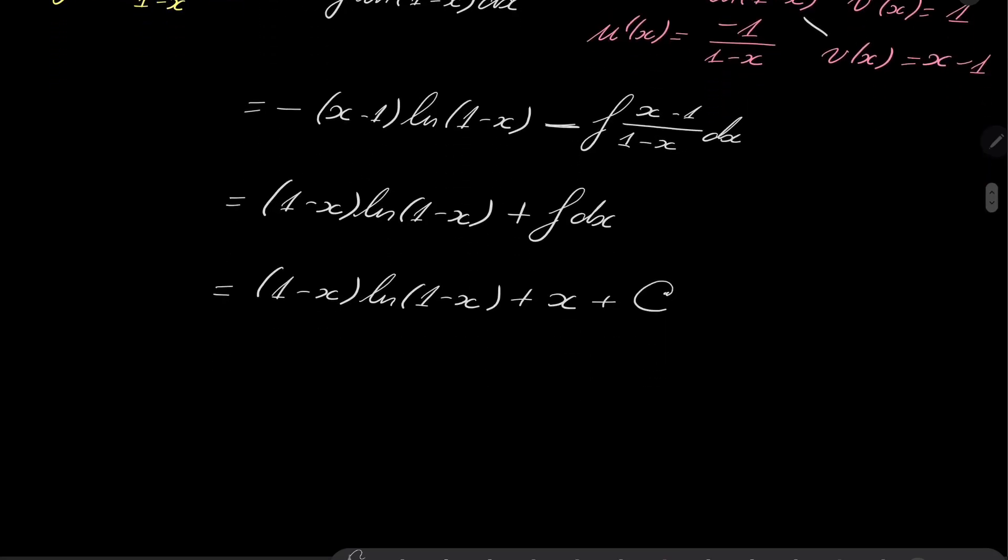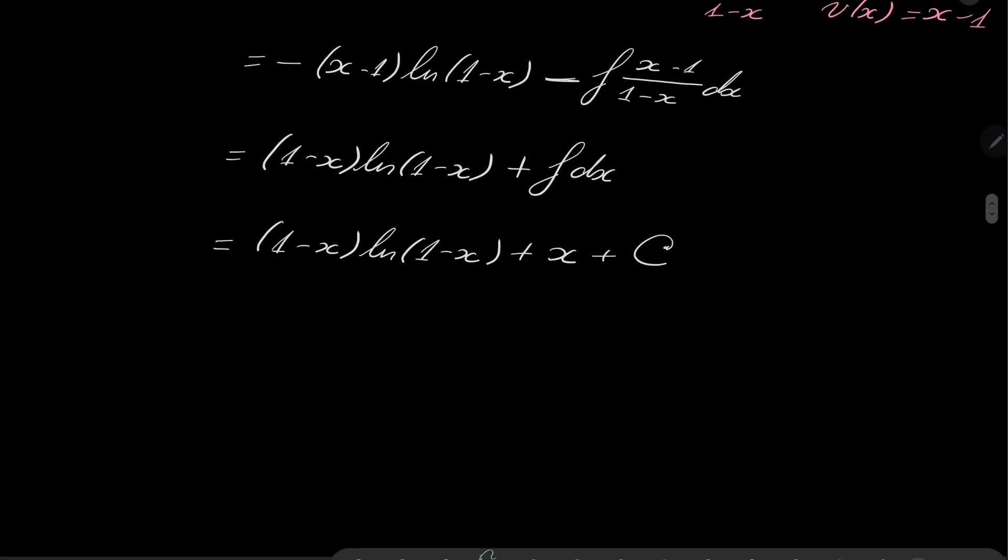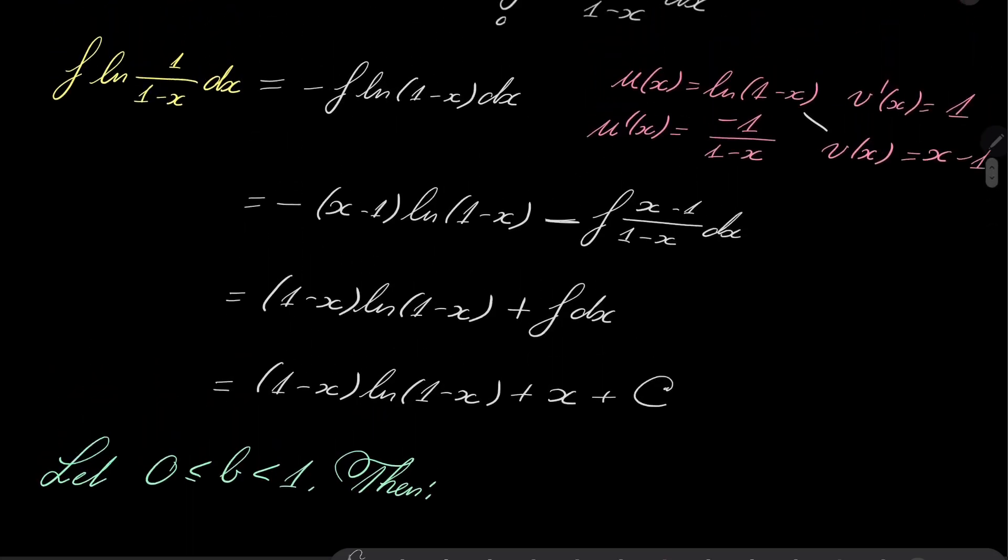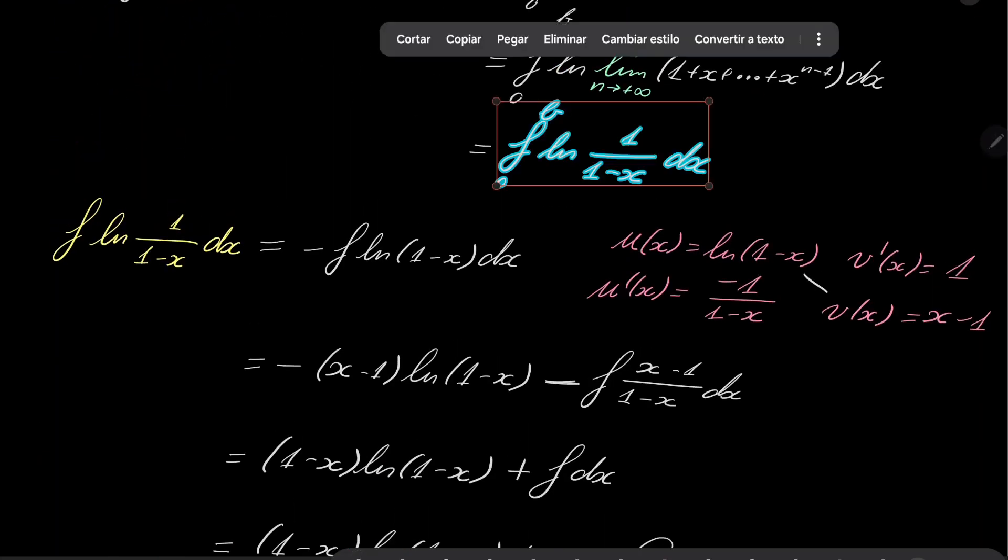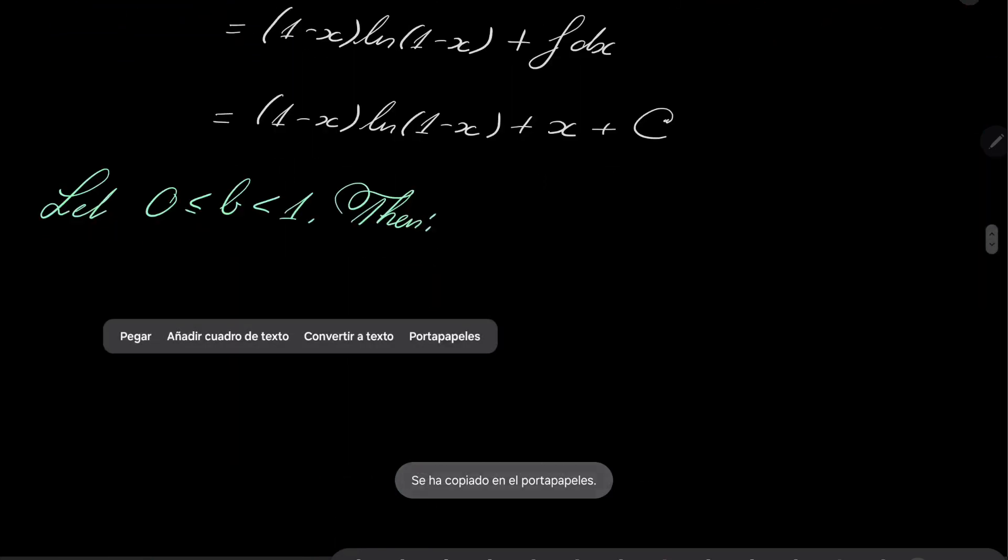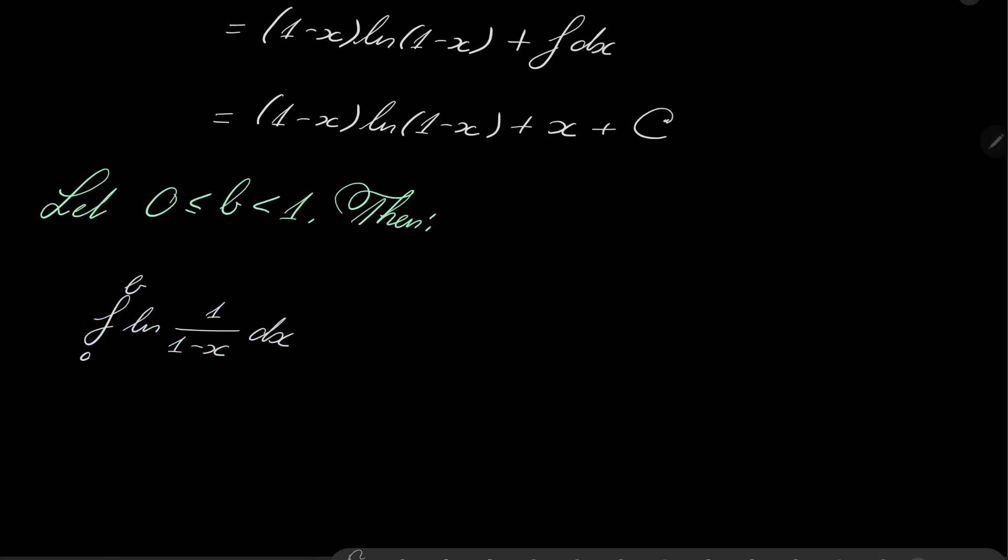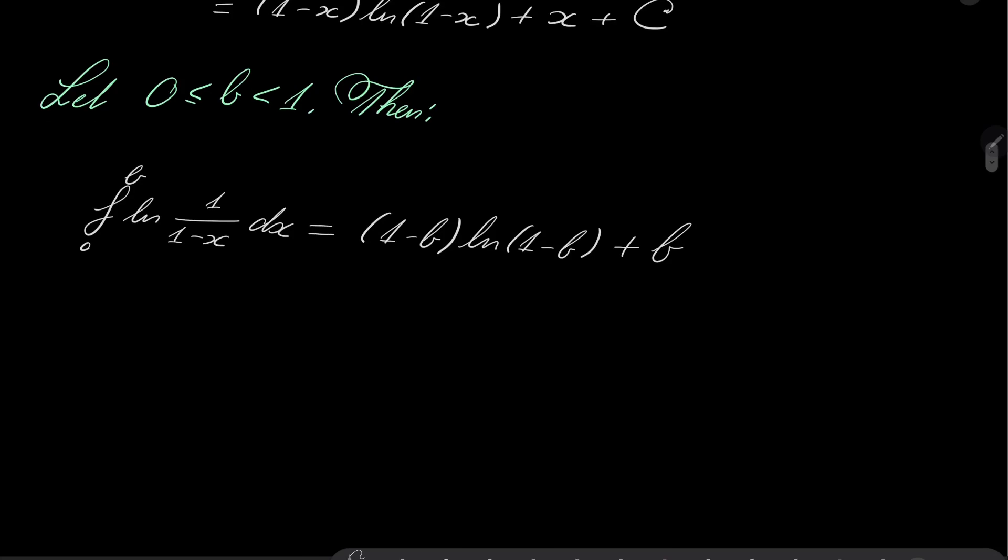So what about our integral? Now, we will consider two cases. So first, let b be between 0 and 1. Then our integral equals, well, let's take a look. If we plug in b, we will have 1 minus b, natural log of 1 minus b, plus b. And if I plug in 0, natural log of 1 is 0, and this disappears, and constants disappear as well.